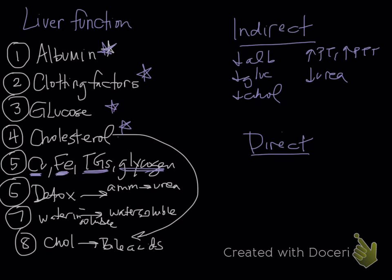Direct liver function tests - you can imagine if the liver is supposed to convert ammonia to urea, then an increase in ammonia is a direct liver function test. The other is bile acids, and we'll talk more about these later on.